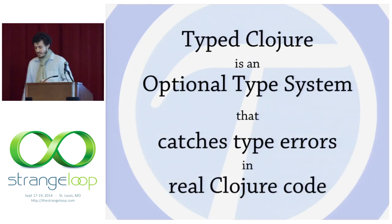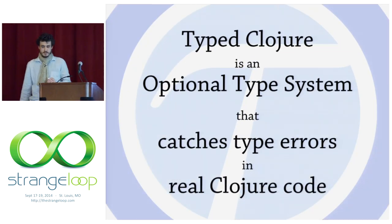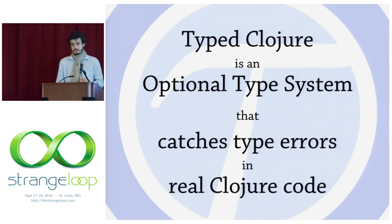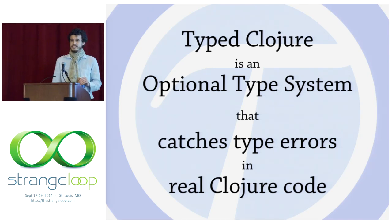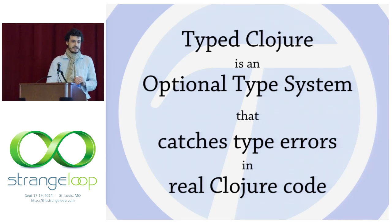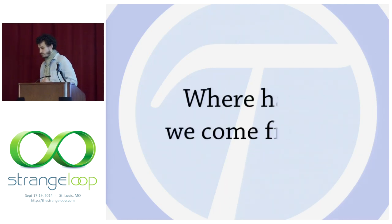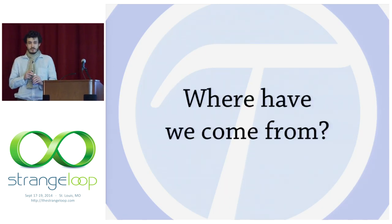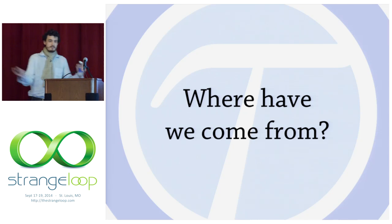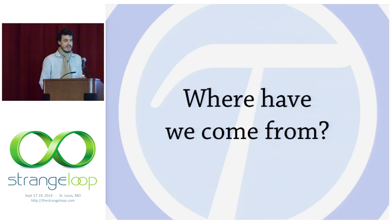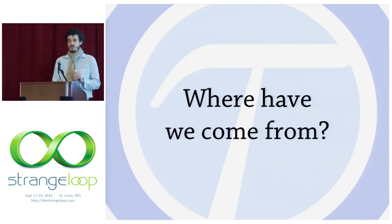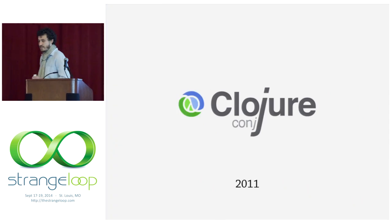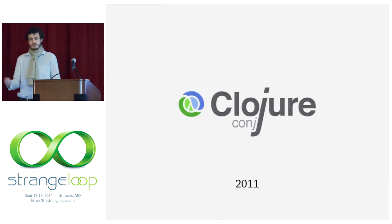This is untyped closure and it works for all three use cases. Type closure is an optional type system that catches type errors in real closure code, and the rest of this talk will be detailing exactly that claim. Let's step back for a minute and look at the history of type closure — where have we come from?